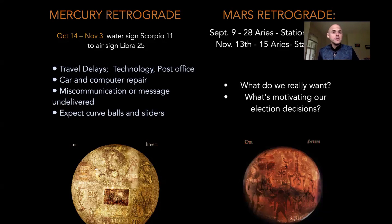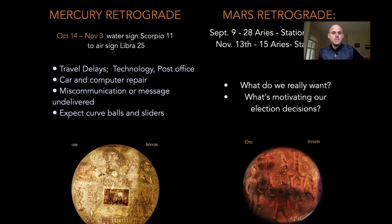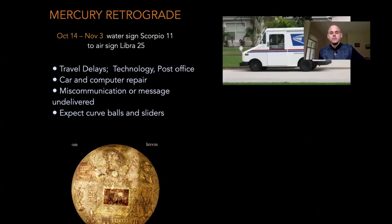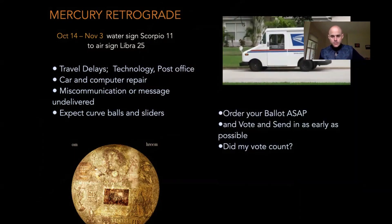So what's going to happen? A bombardment of ballots — are they going to be legitimized or not? Mars retrograde raises questions about what do we really want and what's motivating our election decisions. That Aries energy is very potentially combative, competitive, fierce, ugly. There are debates coming September 29th, and one right around October 14th. The recommendation is to order the ballot ASAP, vote, and send it in as early as possible so that your vote counts.